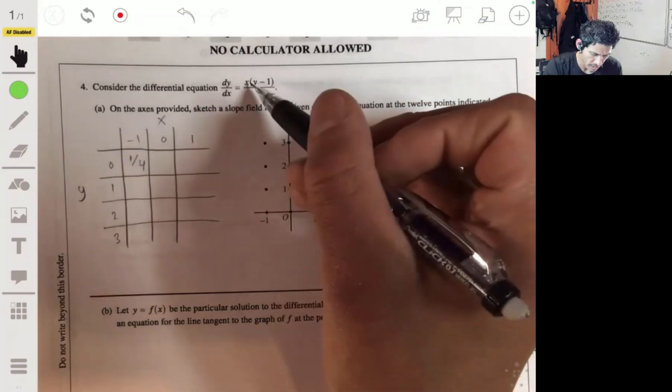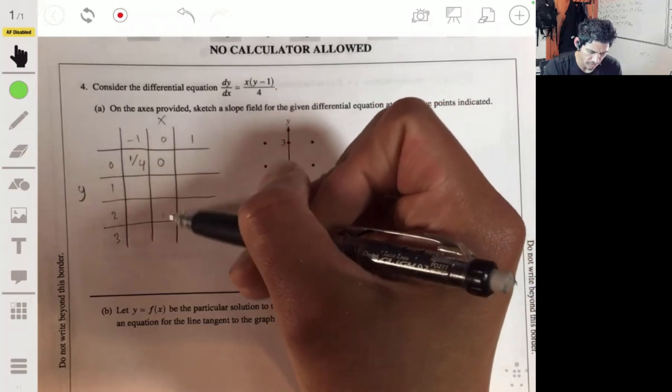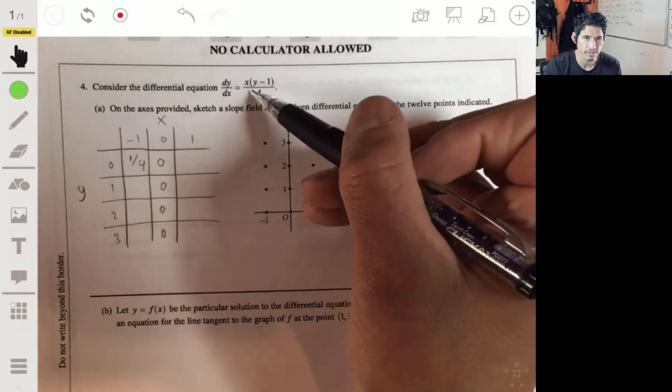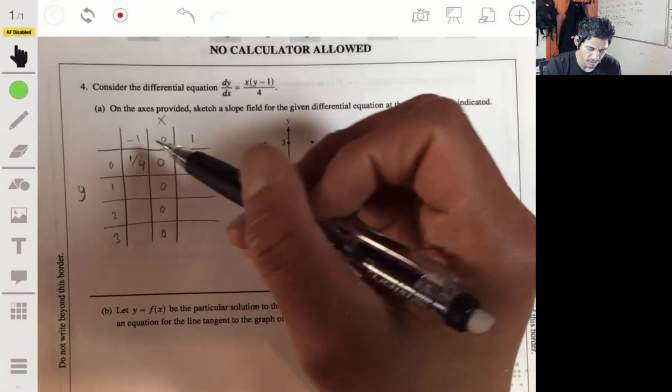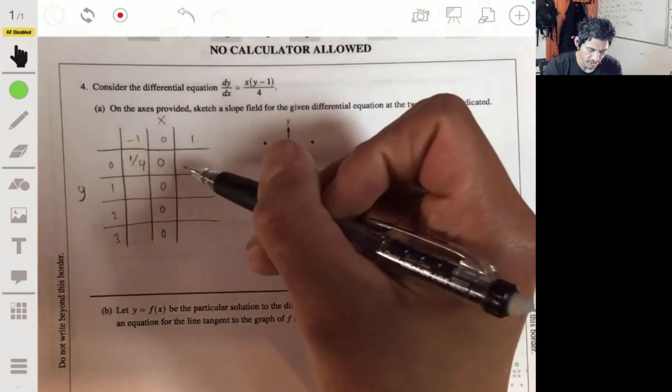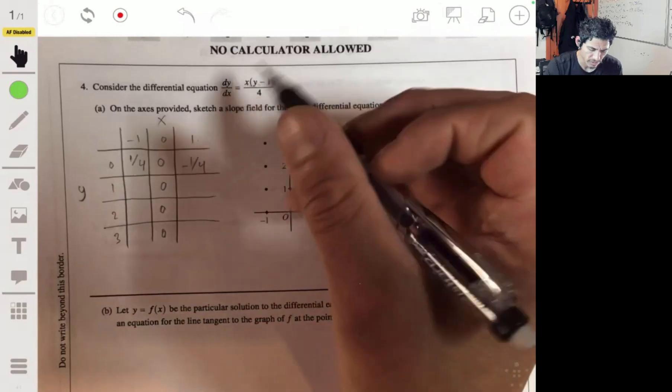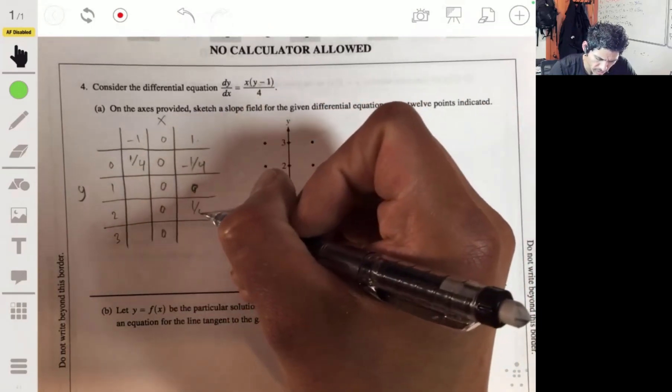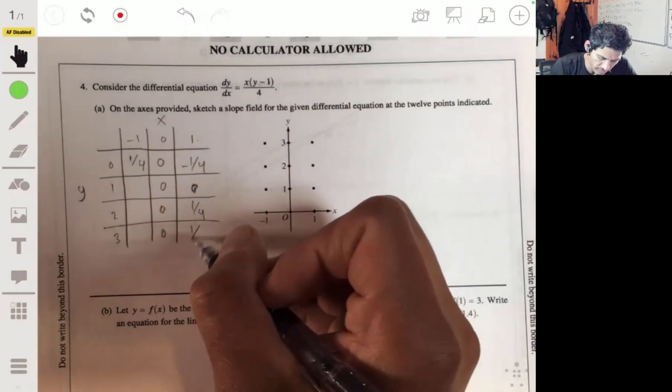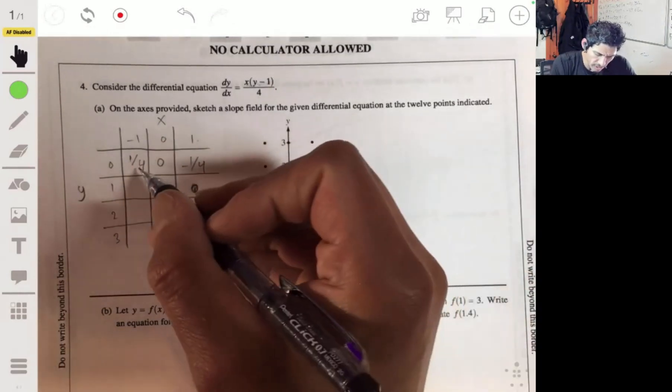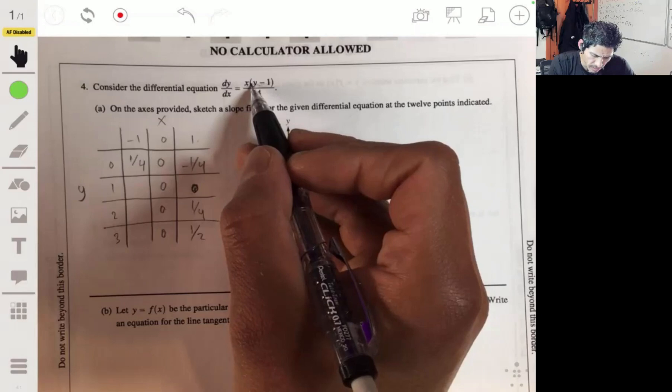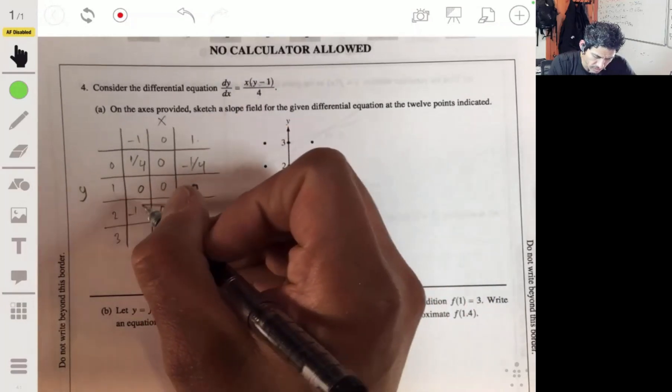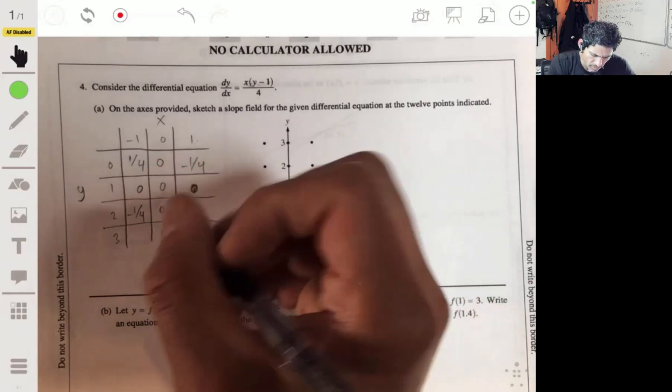Y's from zero to three. So plug negative one and zero into here: negative one for x, zero for y, we get negative one times negative one, one fourth. Zero for x, anytime we have zero for x that just becomes all zero, so this entire column is all zero. This column we have the y's are all ones, so we really just care about (y minus 1) over 4. Here we have zero minus 1 over 4, so negative one fourth. One minus 1 over 4, so zero. Two minus 1 over 4, so one fourth. And three minus 1 over 4, so two fourths or one half.